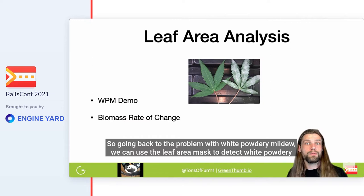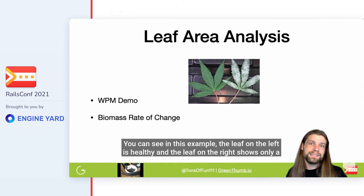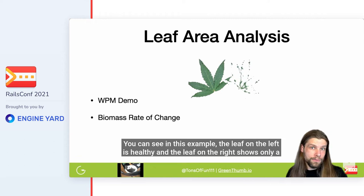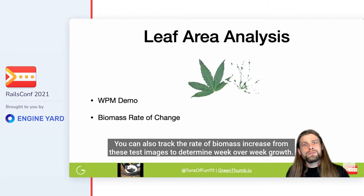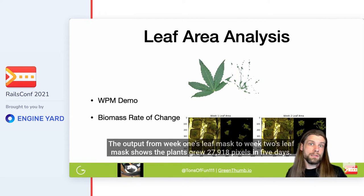Going back to the problem with white powdery mildew, we can use the leaf area mask to detect it by tracking the decay in healthy leaf area pixels. In this example, the leaf on the left is healthy and the leaf on the right shows only a small percentage of its area as healthy leaf pixels. You can also track the rate of biomass increase from these test images to determine week-over-week growth. The output from week one's leaf mask to week two's leaf mask shows the plants grew 27,918 pixels in five days.